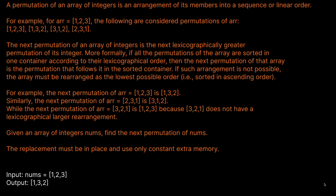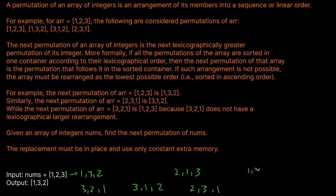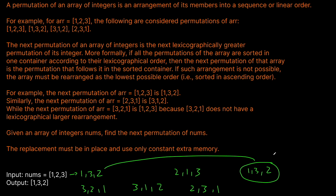So if we look at our example here with the numbers 1,2,3, obviously the next biggest number that we can form with this is going to be 1,3,2, right? Because all of our possible options are 3,2,1 — 3,1,2 — 2,1,3 — 2,3,1 — or 1,3,2. And obviously 1,3,2 is the smallest number that comes after 1,2,3. Each one of the others is bigger, so obviously this is our next permutation.